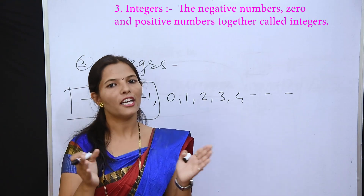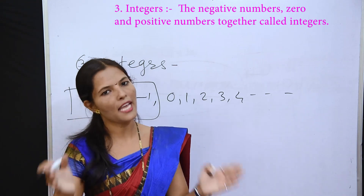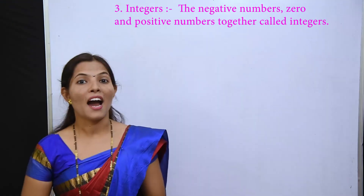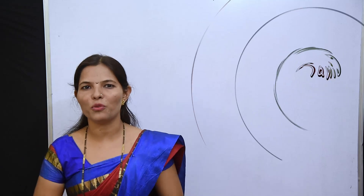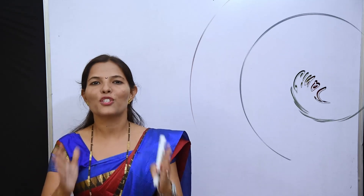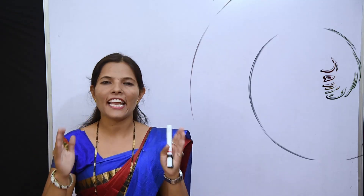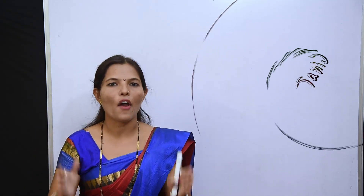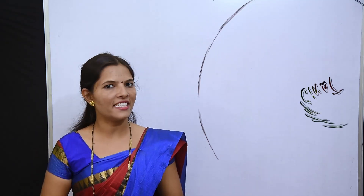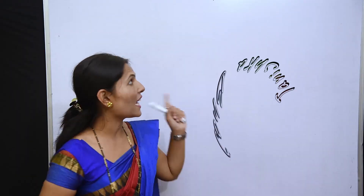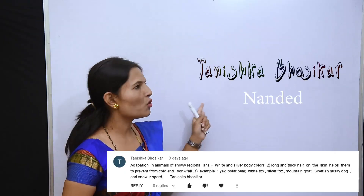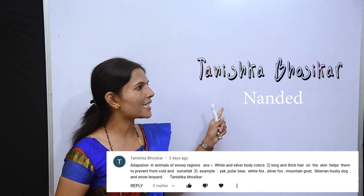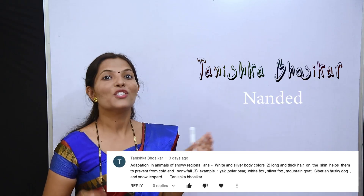How do you show them on the number line? What is the number line? That is coming in the next lesson. And the next shining star of DS Digital School is, as you can see, Tanushka Boiskar from district Nandeng.